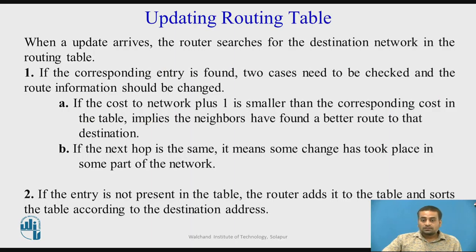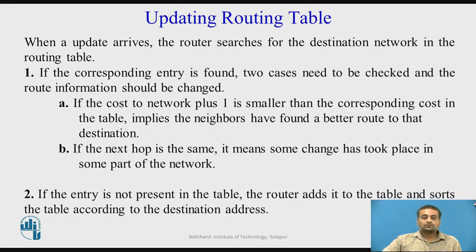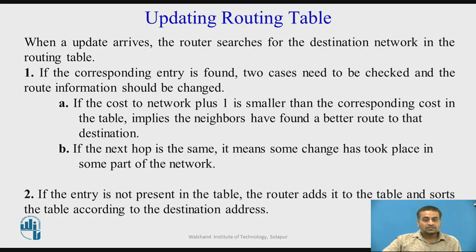When an update reaches a router, the router searches its routing table for the destination network received in the advertisement. If the corresponding entry is found, there are two cases. The first case: if the cost to the advertised network plus one is smaller than the corresponding cost already in the routing table, this implies that the neighbor has found a better route to the destination network.